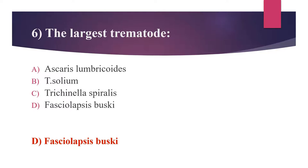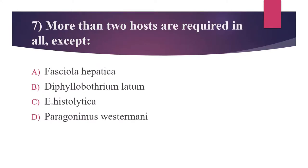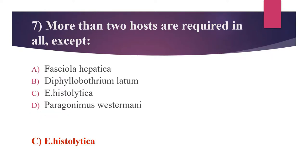The seventh question: More than two hosts are required in all of the following except. Option A: Fasciola hepatica. Option B: Diphyllobothrium latum. Option C: Entamoeba histolytica. Option D: Paragonimus westermani. The answer is Option C, Entamoeba histolytica. Entamoeba histolytica is predominantly found in primates including humans, and occasionally in dogs, cats, cattle, and pigs. It is monogenetic, meaning its life cycle is completed in only one host.